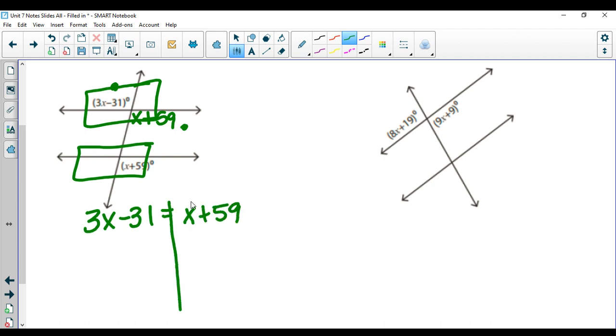So following your rules for solving equations, we distribute first. There's nothing to distribute. We would combine next. There's nothing to combine. And since we have variables on both sides, we would move the variable next. We typically are going to move the smaller of the two variables so we can avoid working with negatives. So I'm going to move this x by subtracting an x on both sides. 3x minus x is just going to give me 2x. Remember, x is really just 1x here. Bring down that minus 31. x minus x canceled out, leaving me with 59 over here.